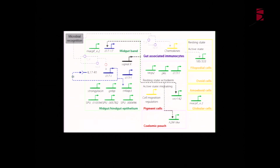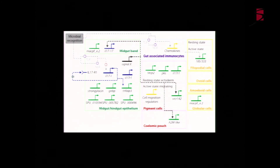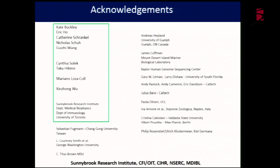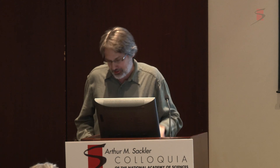The idea is eventually to take all of this and start building a network-type matrix, to be able to compare between vertebrates and echinoderms within deuterostomes, and then outside of deuterostomes. Thank you.